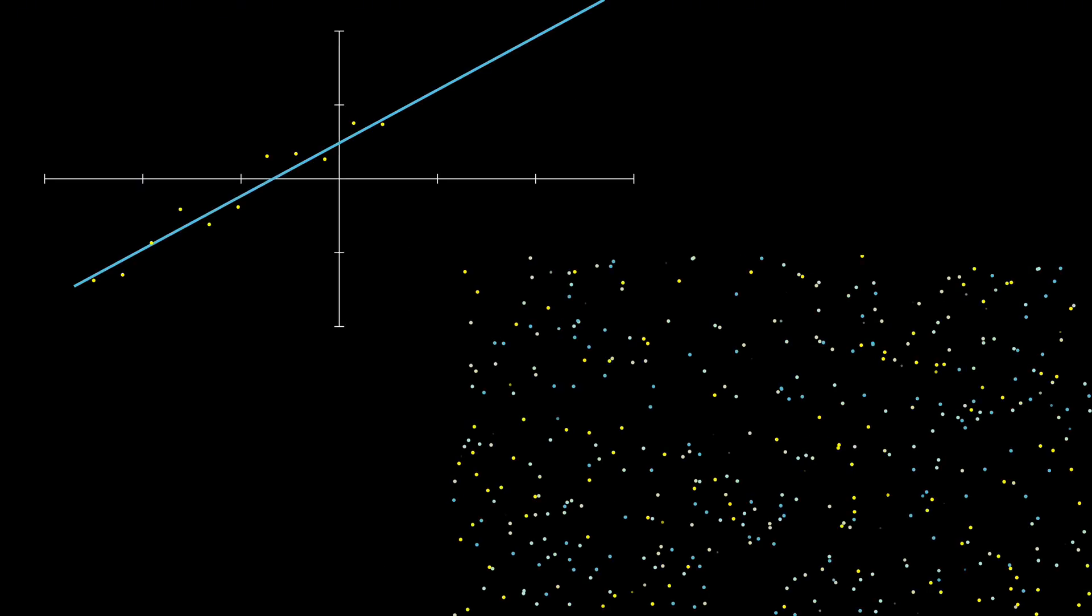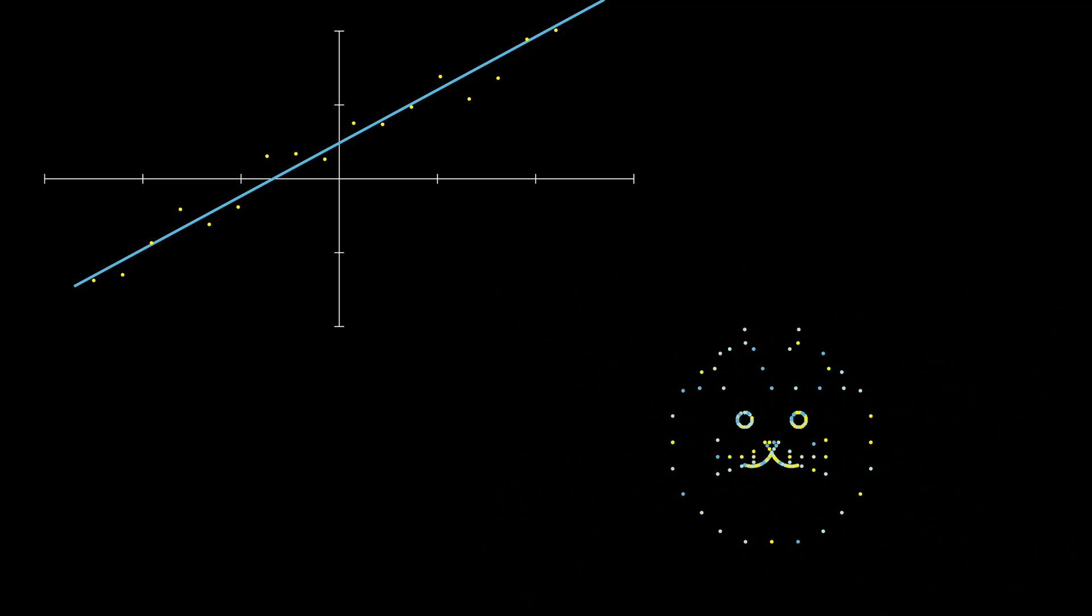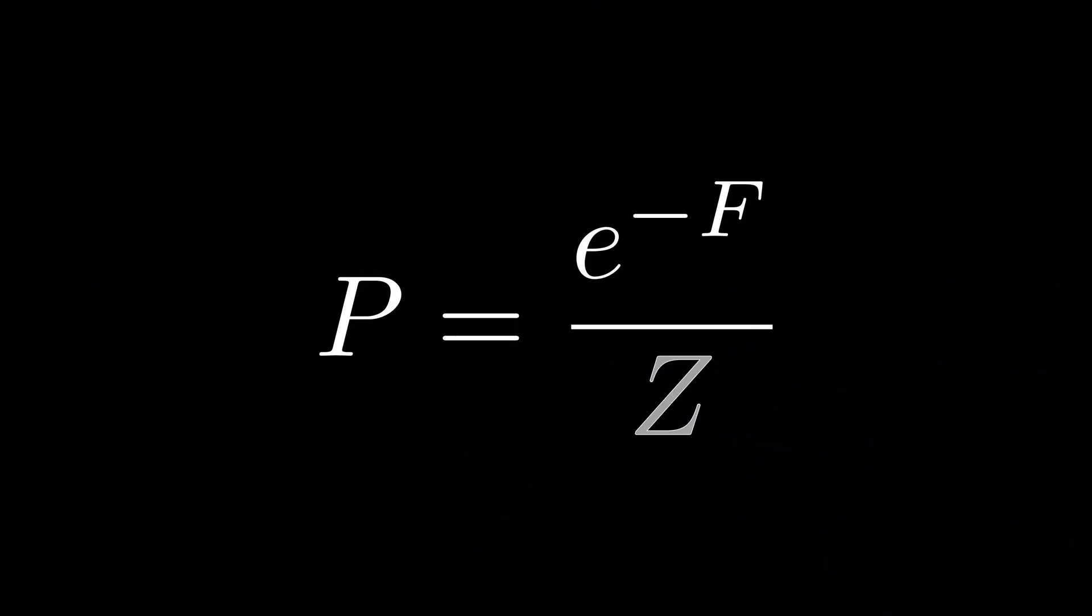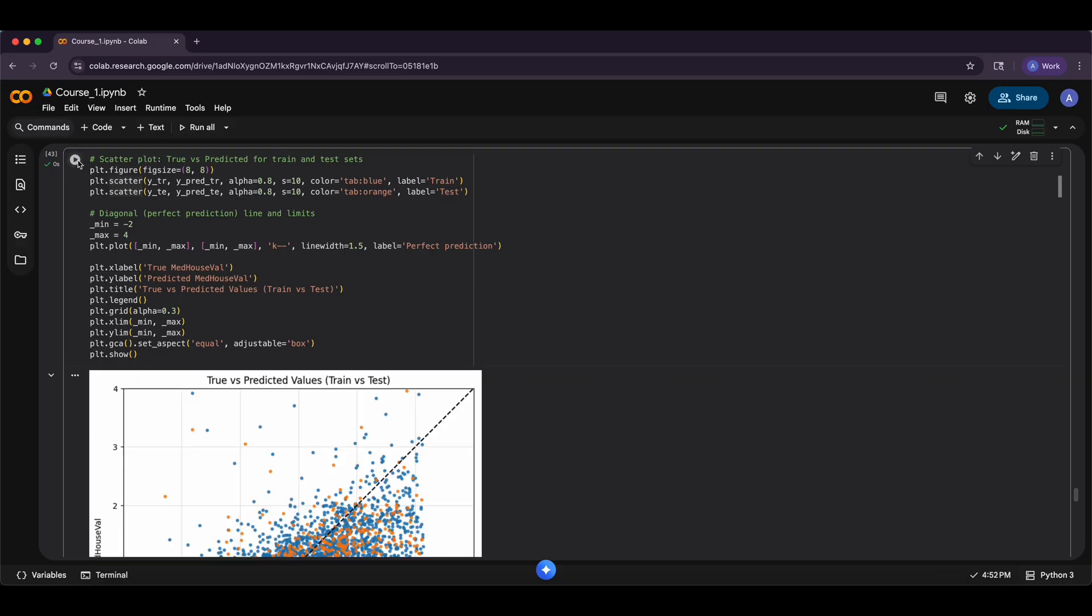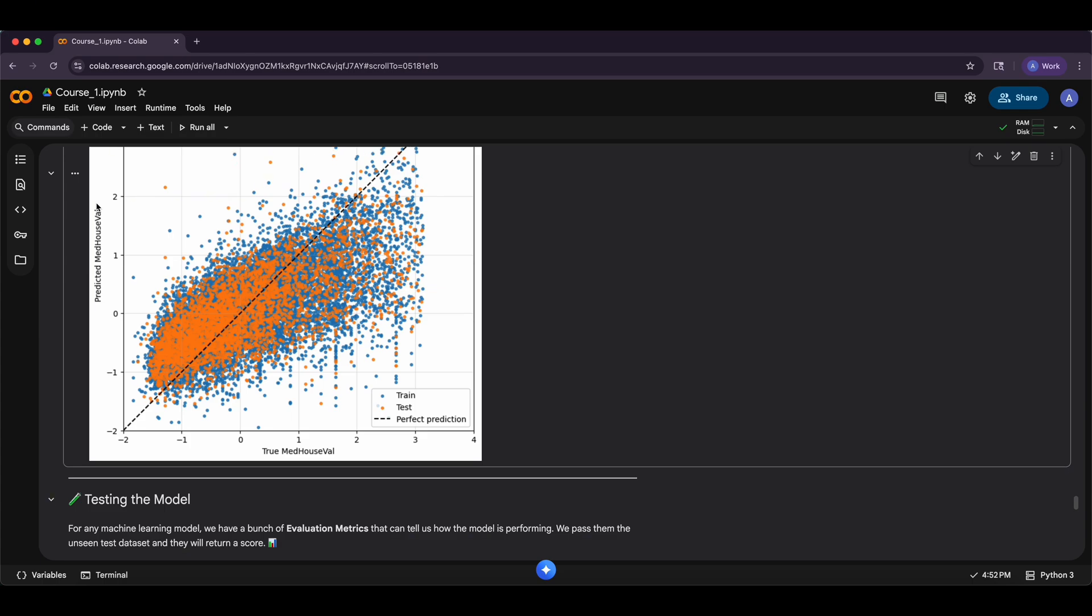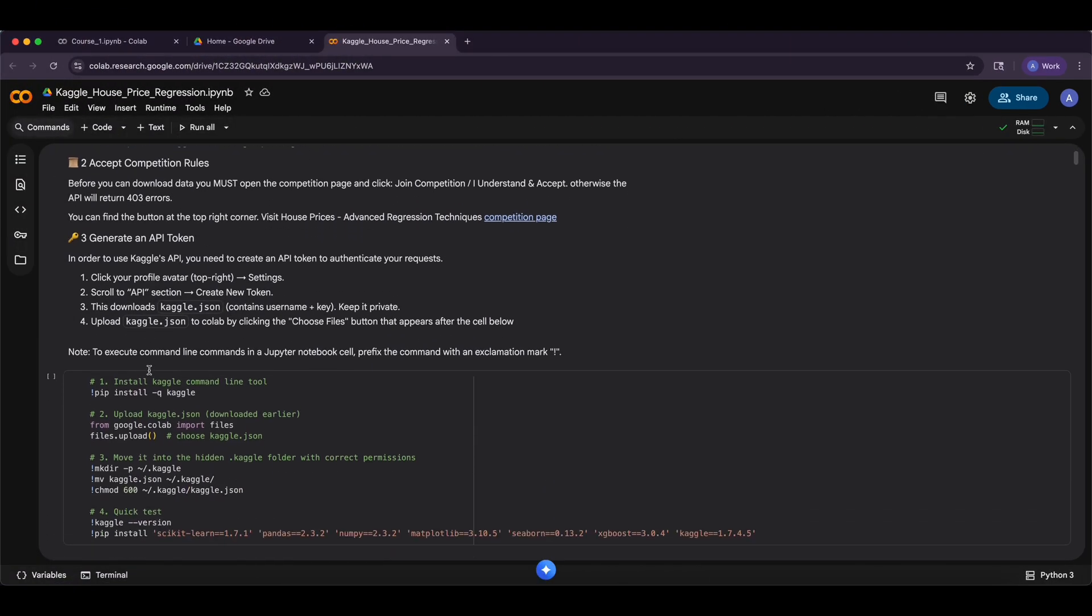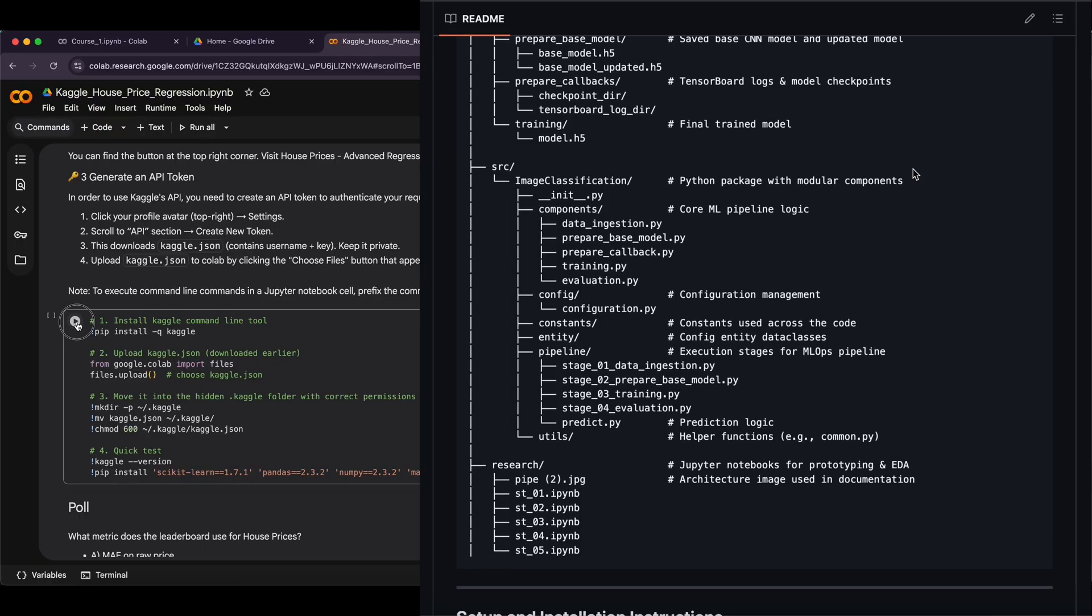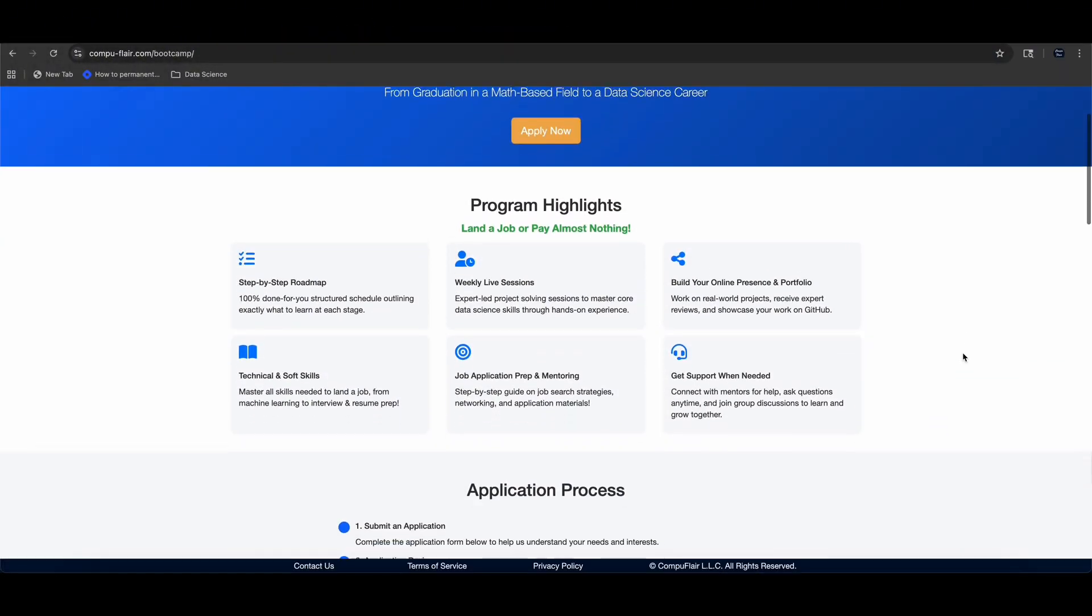Did you know that every machine learning model, from simple regression to image-generating models like DALL-E, can be explained by a single elegant equation? If you're interested in learning machine learning in a unified way, visit our webpage at Compuflare.com. This is a unique place to understand every machine learning model through one elegant equation from a physics-inspired perspective. In addition to the courses, we offer end-to-end intermediate and advanced projects that develop your skills, experience, and online presence, helping you land top industry roles. Visit Compuflare.com and start building your data science career.